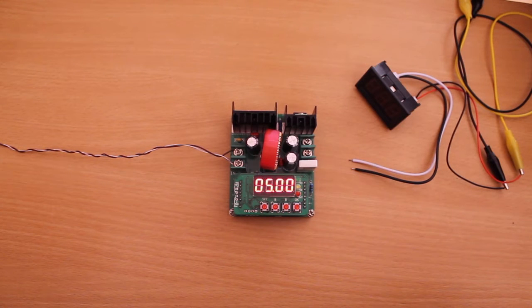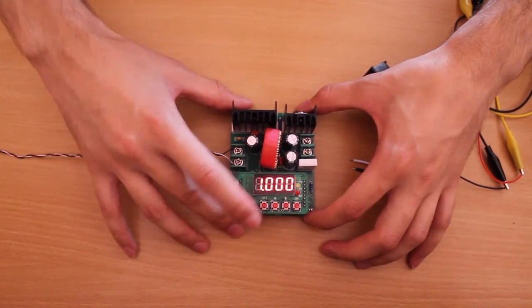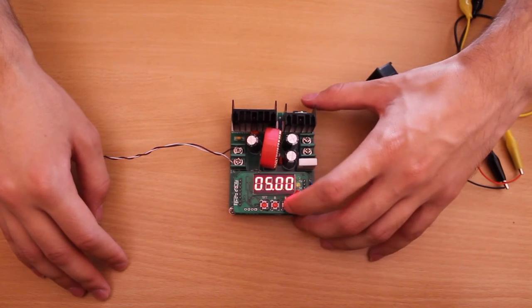You can tell whether the display shows volts or amps by the position of the decimal point. This is volts and this is amps. Voltage resolution is 10mV.